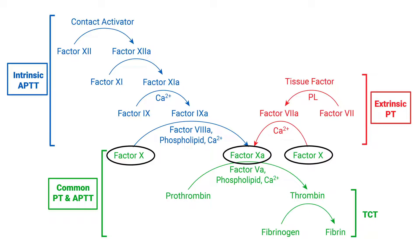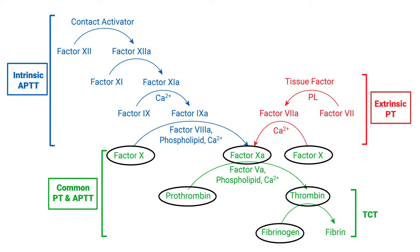Ultimately, factor Xa, in the presence of its cofactor, is going to rapidly convert a small amount of prothrombin to thrombin. And this small amount of thrombin is all that is required to convert fibrinogen — clotting factor number one — to the fibrin-rich clot.